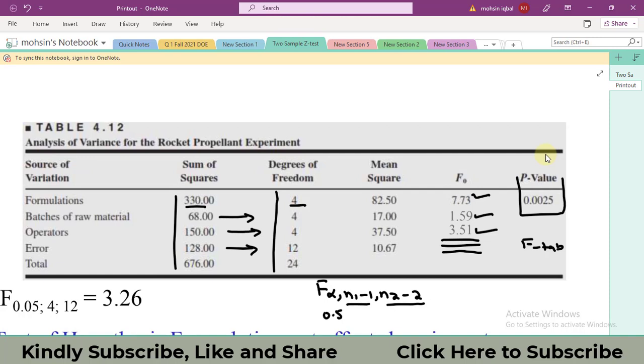So here I have 0.05, F 0.05, this n minus 1 is the degree of freedom for the numerator. In this case and all of these cases we have 4 degrees of freedom for the numerator and n2 minus 2 is the degrees of freedom for the error term. In all of these cases I have 12. So by looking into a table I got 3.26.